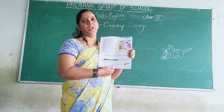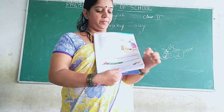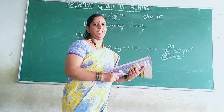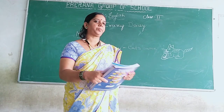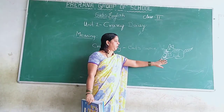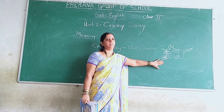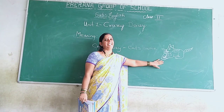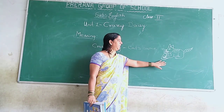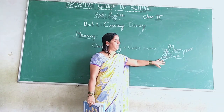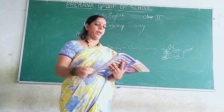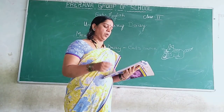So all of you open your page number 15. You have a poem called Crazy Daisy. So here on the board I have a picture. Can anybody guess what the picture is? It is a cat. You can see the picture of a cat.